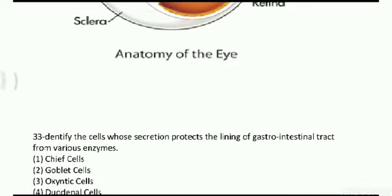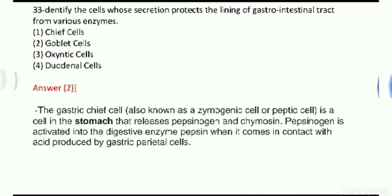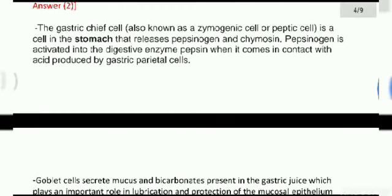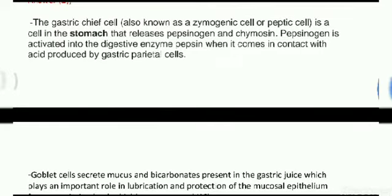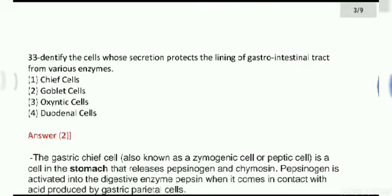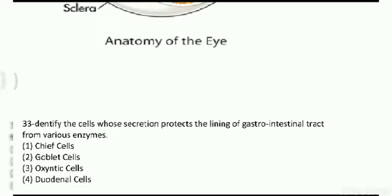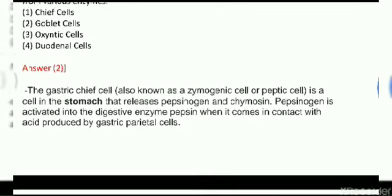Next: identify the cells whose secretions protect the lining of the GI tract from various enzymes. Four options: chief cells, goblet cells, oxyntic cells, and duodenal cells. The answer is option 1, chief cells. The gastric chief cells, also known as zymogenic cells or peptic cells, are the cells in the stomach that release pepsinogen and chymosin. Pepsinogen is activated into the digestive enzyme pepsin when it comes into contact with acids produced by gastric parietal cells. Different enzymes are needed because the pH of the GI tract varies widely — sometimes very acidic, sometimes very alkaline — so chief cells secrete mucus lining to protect the enzymes.